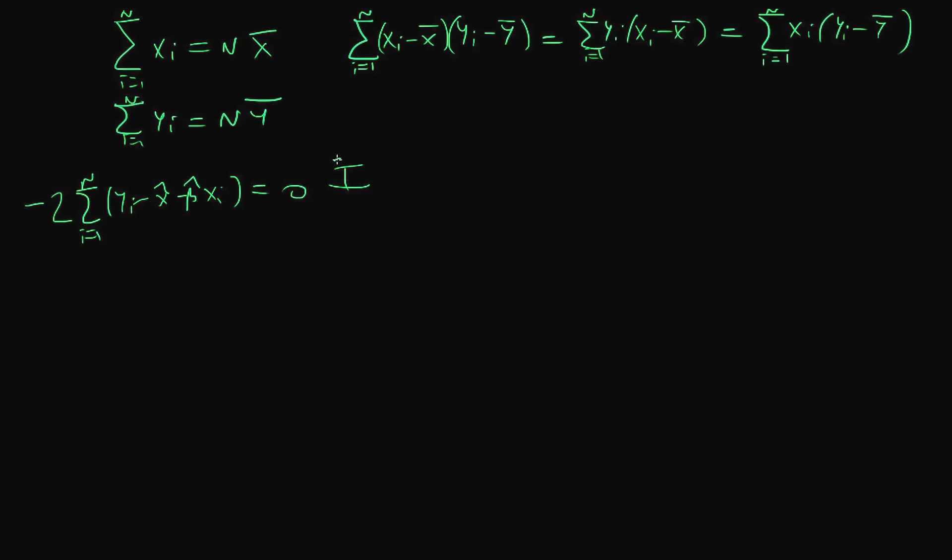The second one is minus 2 times the sum from i equals 1 to n of xi times (yi minus alpha hat minus beta hat xi) equal to 0.